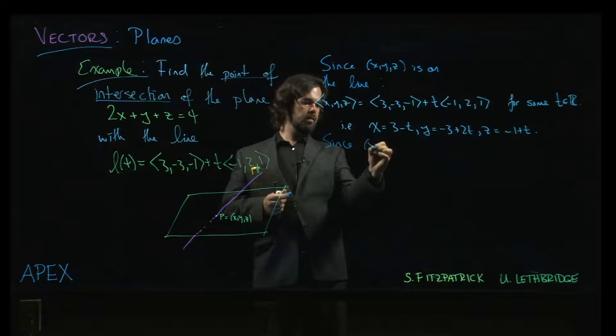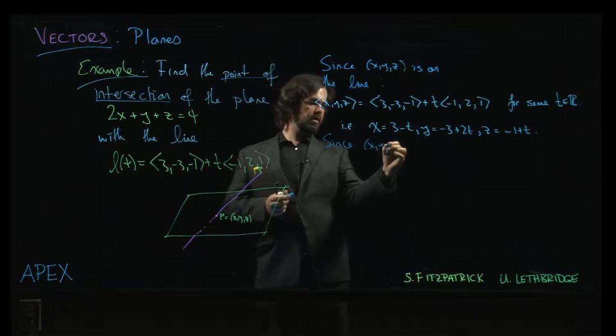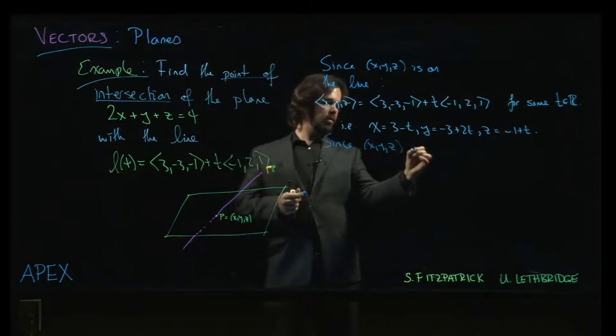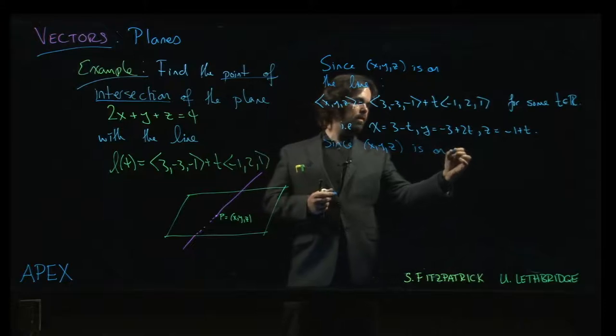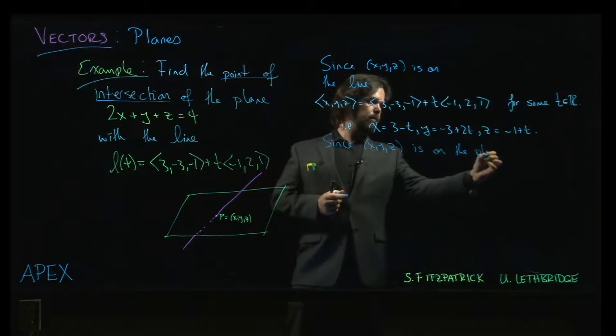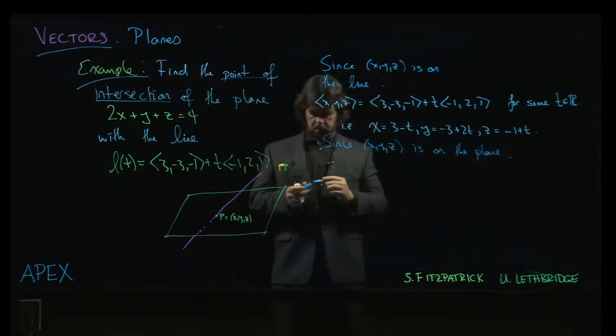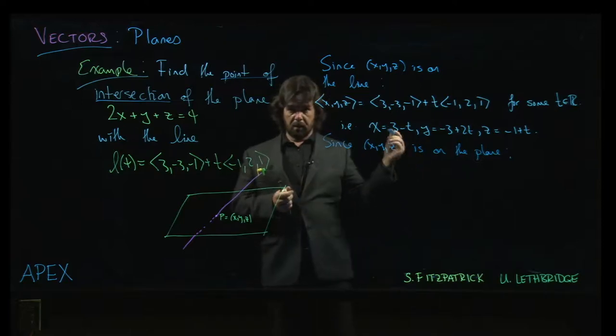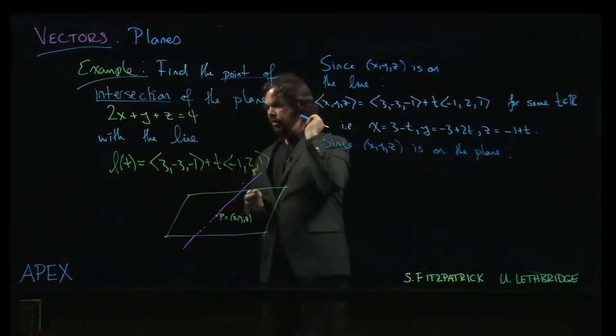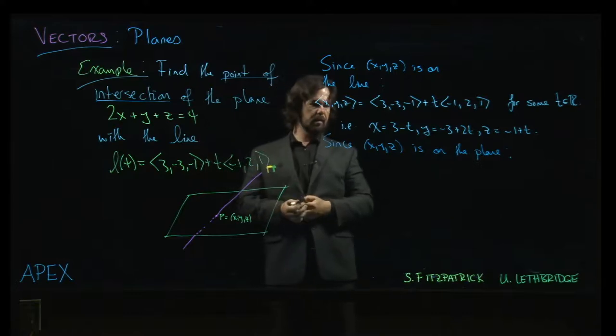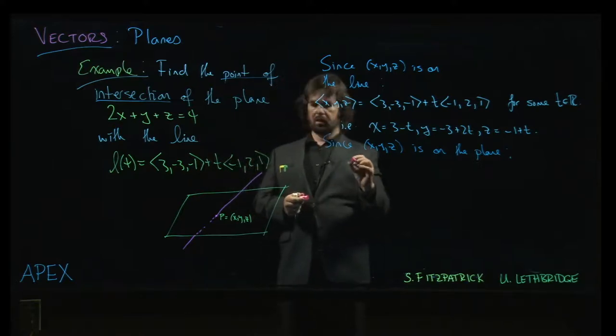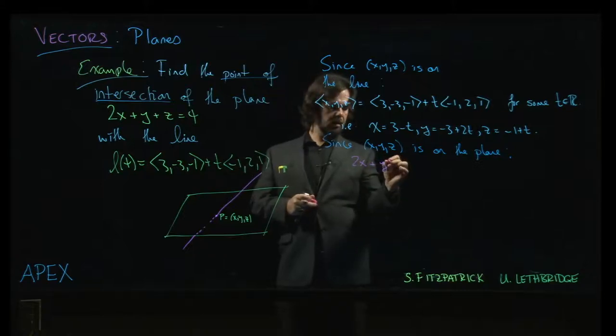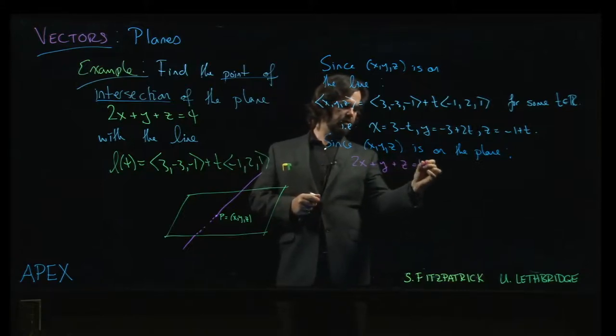But, this point is also on the plane. Well, in order for that to be a point on the plane, it has to satisfy the equation of the plane. This right here. So, we need to know that 2x plus y plus z is equal to 4.